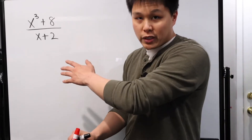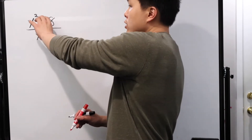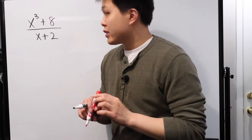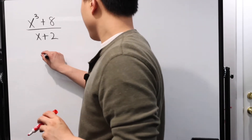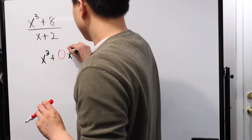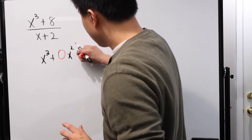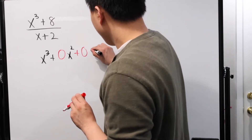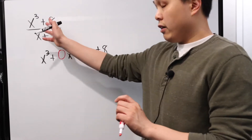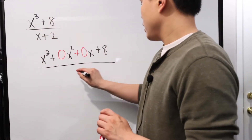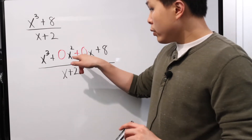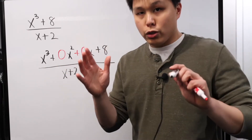This next one is also seen in the previous video. When we were doing long division, we actually had to include a lot of placeholders. When you're doing synthetic division, we have to do the same thing — the placeholder doesn't change. So x cubed plus eight is technically x cubed plus zero x squared plus zero x plus eight. Those two middle terms are basically invisible missing terms. The rest is still x plus two.